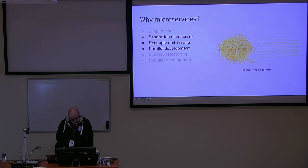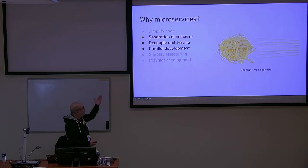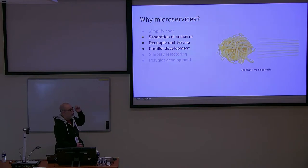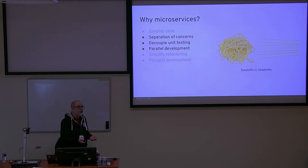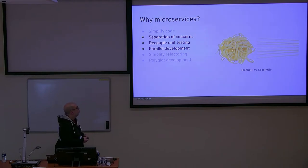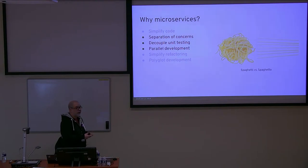Microservices also introduce separation of concerns. With separation of concerns, we can do useful things like decoupling unit testing. If anyone has had to do continuous integration on a monolithic app, it was particularly difficult — easy to overlook subtleties in testing scenarios. With a smaller component of code with a well-defined API, it's much easier to create testing scenarios or continuous integration.